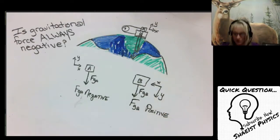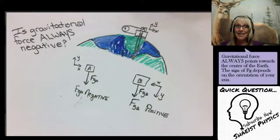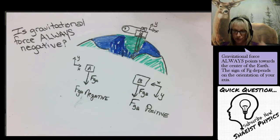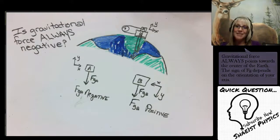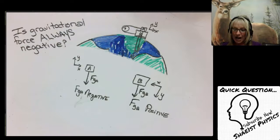So the answer to the question is Fg is always pointed down towards the center of the earth. However the sign is going to depend on your axis position.